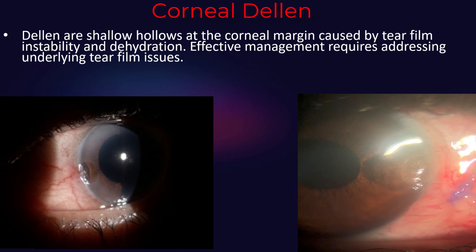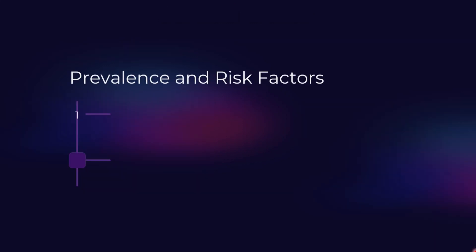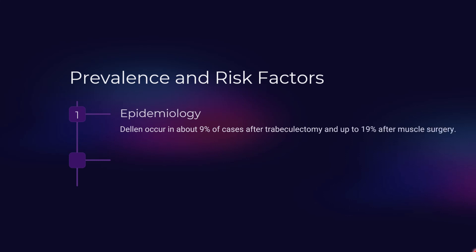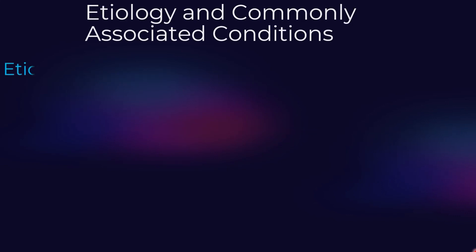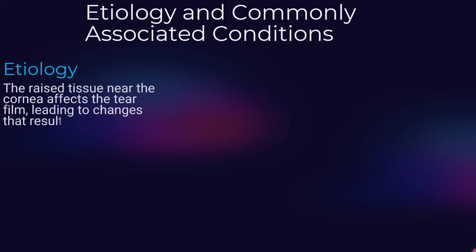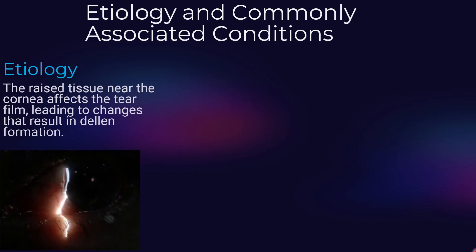When there is instability in the tear film, especially in the mucin layer, it can lead to localized dryness and dehydration of the corneal surface. It is important to address the underlying tear film instability and dehydration to manage corneal dellen effectively. Corneal dellen occurs in about 9% of cases after trabeculectomy, which is a surgery for glaucoma, and also up to 19% after muscle surgery.